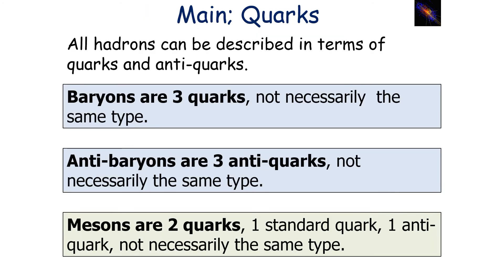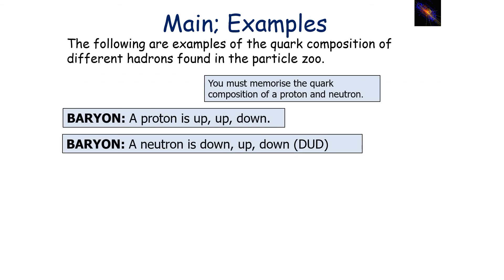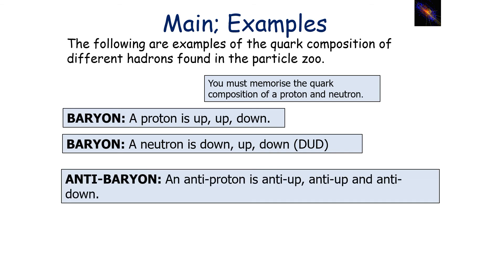All hadrons can be described in terms of quarks and antiquarks. Baryons are three quarks, not necessarily the same type. Antibaryons are three antiquarks, not necessarily the same type. Mesons are one quark, one antiquark, but not necessarily the same type. You must memorise the quark composition of the proton and the neutron. A proton is up, up, down, and a neutron is down, up, down. An antiproton is anti-up, anti-up, anti-down, whilst an antineutron is anti-down, anti-up, anti-down.